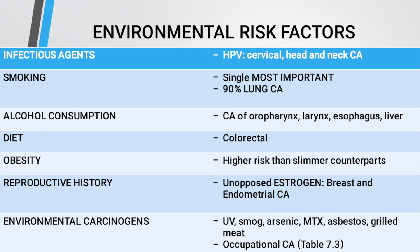Neoplasia may be acquired through chronic inflammatory disorders, precancerous lesions, and immunodeficiency states. Environmental factors include infectious agents present in the cervical, head, and neck regions. Smoking is the single most important factor — 90% of lung cancer is because of smoking. It also affects the oropharynx, larynx, esophagus, and bladder. Diet causes neoplasia in colorectal cancer; obesity carries a higher risk. Environmental carcinogens include smog, arsenic, asbestos, and grilled meat.